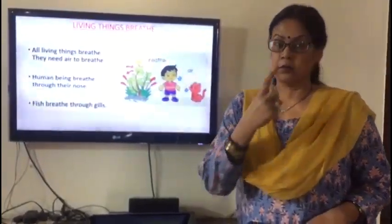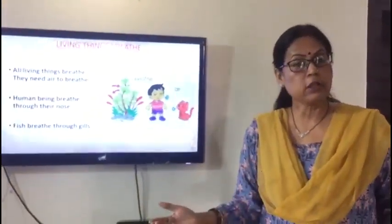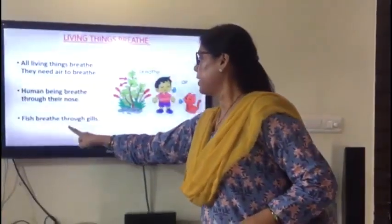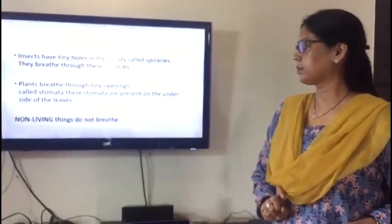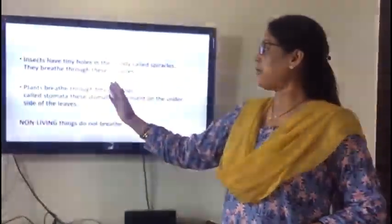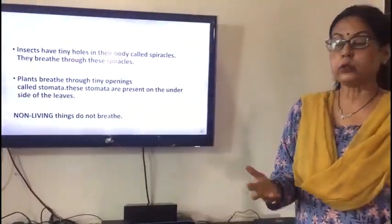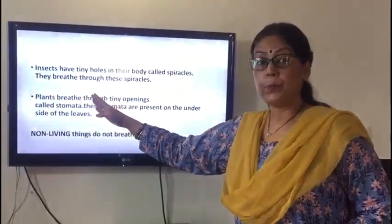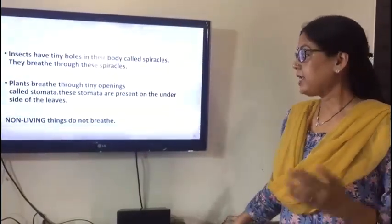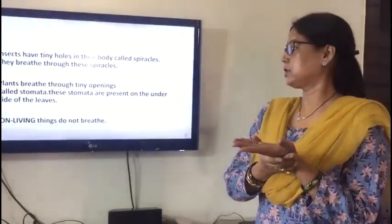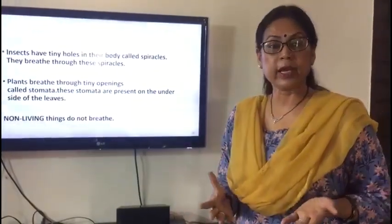How do we breathe? Human beings breathe through their nose. Fish breathe through gills. Insects have tiny holes in their body called spiracles, and they breathe through these spiracles. Plants breathe through tiny openings called stomata, which are present underneath the leaves — they are tiny holes through which air goes in, and that is the way plants breathe.